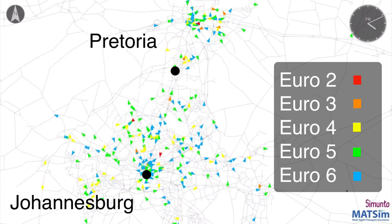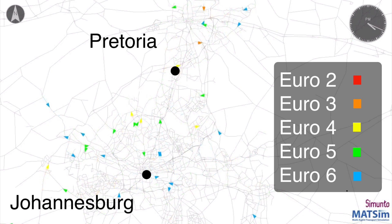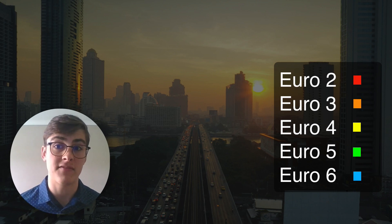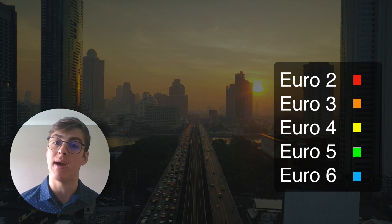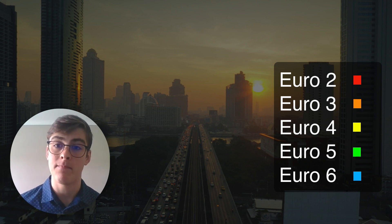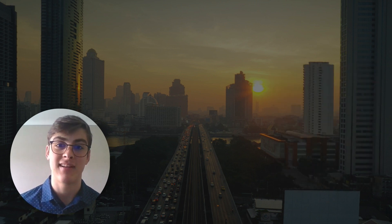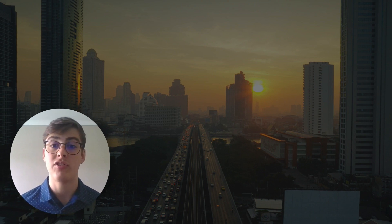Suppose we have a model that represents the Gauteng vehicle population. In that case we can implement scenarios and ask questions like: how much do Euro 2 vehicles — lots of huffs and puffs — contribute to the pollutants emitted on a daily basis? And consequently, if we tax these heavy emitters, would they drive less, choose different routes, or divert to a more eco-friendly mode of transport?